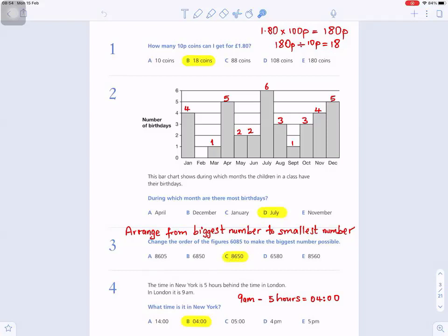Question four: The time in New York is five hours behind the time in London. In London it is 9 a.m. What time is it in New York? Go from 9 a.m., you want to go five hours behind, so 9 a.m. minus five hours will give you 4 a.m. in the morning.